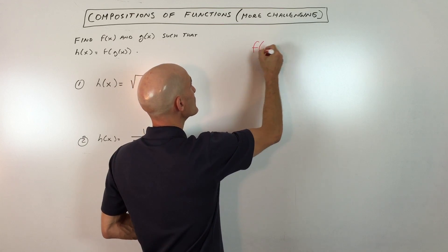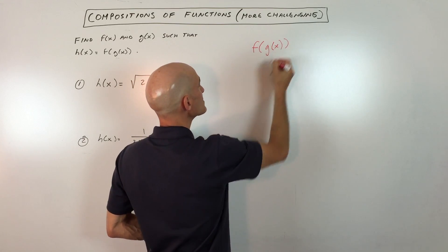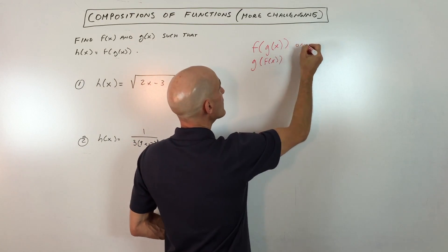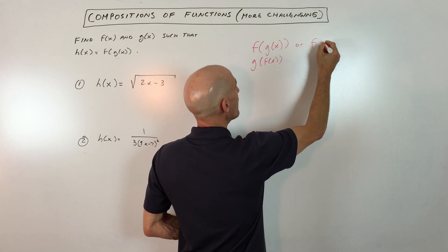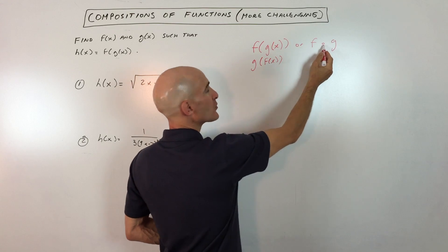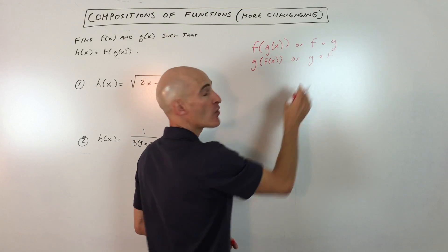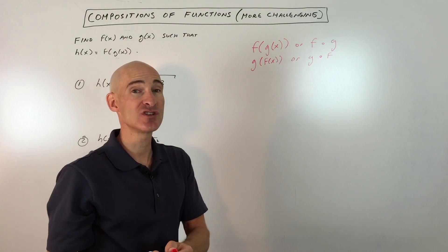The key thing is the notation. They're either going to show you something like f(g(x)) or g(f(x)), or instead of writing it this way, they'll write f∘g with a little circle, or g∘f. This is different from multiplication - it actually means composition of functions.